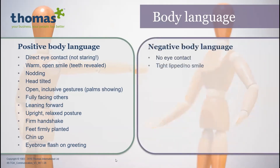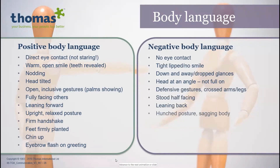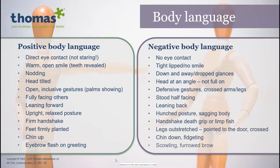Negative body language includes: no eye contact, being tight-lipped with no smile, dropped or averted glances, head at an angle, defensive gestures like crossed arms or crossed legs, half-facing the person and not really engaged, leaning back, hunched posture, a very limp handshake, legs outstretched, chin down, fidgeting, or scowling. All of these things come across as negative body language and would negatively impact on the conversation and your communication style.